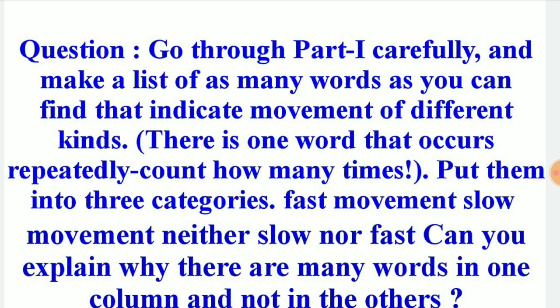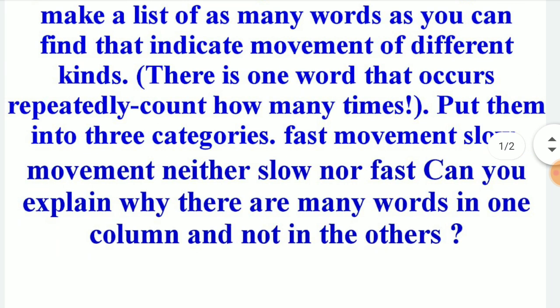Go through Part 1 carefully and make a list of as many words as you can find that indicate movement of different kinds. You have to go into Part 1 and carefully put them into 3 categories: fast movement, slow movement, and neither slow nor fast. Can you explain why there are many words in one column and not in the others?